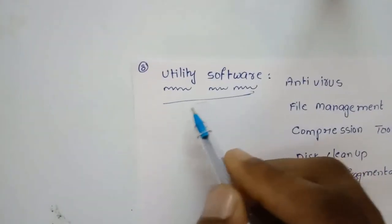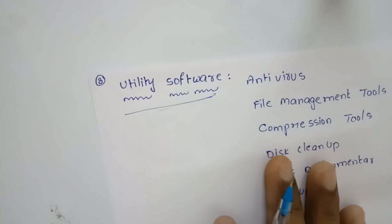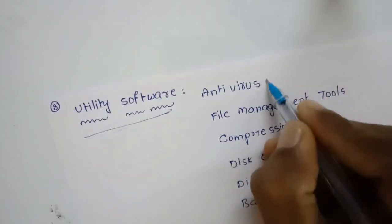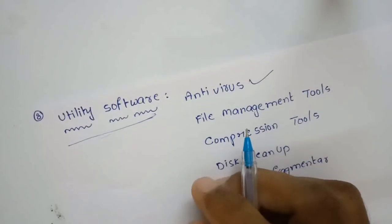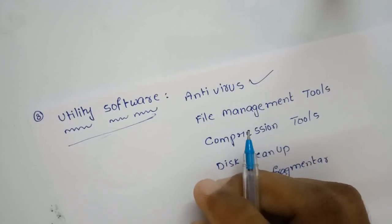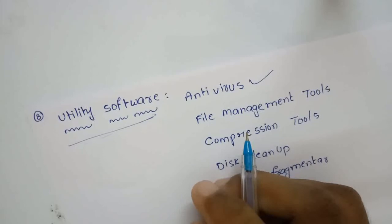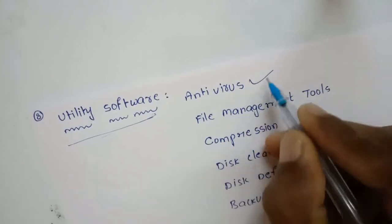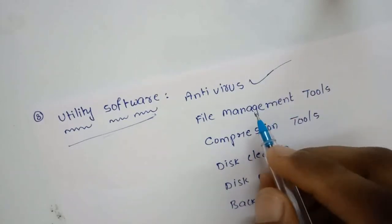Let us look at some of the most popular utility software. The first one is antivirus. A virus can be defined as a malicious program that attaches itself to a host program and makes multiple copies of itself, slowing down, corrupting, or destroying the system. Software that assists the operating system in providing a virus-free environment to users is called antivirus utility software.